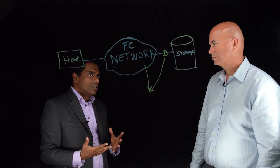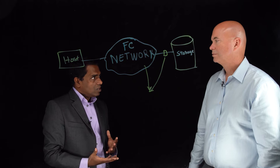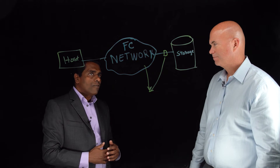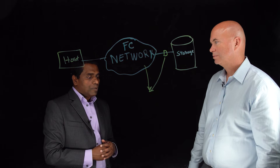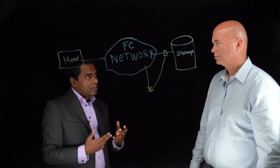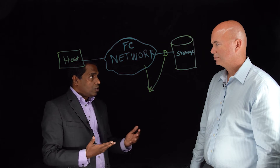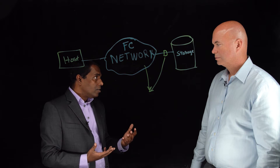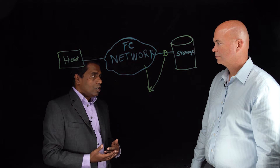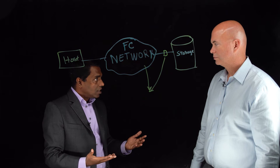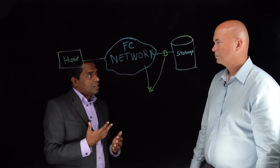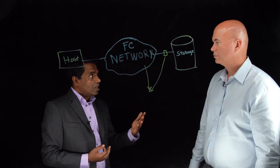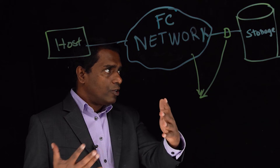Cisco looked at this and designed a solution which can do this very natively by the switch — so you don't have to have these external appliances. In our 32-gig fiber channel product line, we have built-in capabilities within our ASICs which trap the header information of every flow that goes through. Customers can pick and choose which flow they want to monitor and how much they want to monitor. This data is sent in an open programmable format, so we can send it to your data lake or to Cisco's SAN Insights solution. We are now announcing these capabilities not just for SCSI fiber channel workloads, but also for NVMe fiber channel workloads.